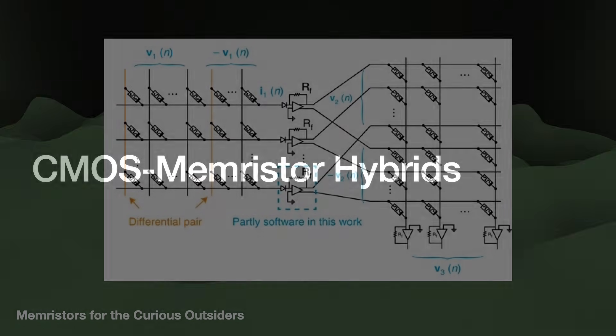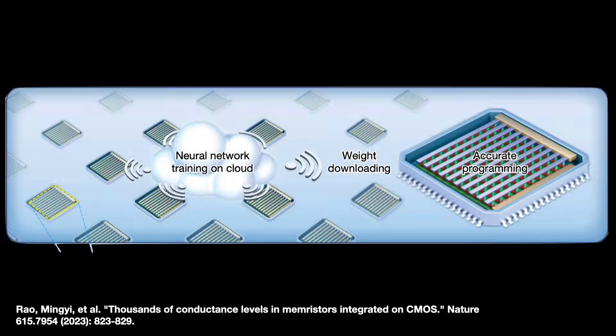These crossbars likely work best for inference, the times when you are actually running the model in the real world. Training a larger commercial-class neural model requires more precision than what modern analog systems can provide and are compute-intensive. So right now, it makes more sense to train the model the usual way, and then transfer it into the memristor crossbar.